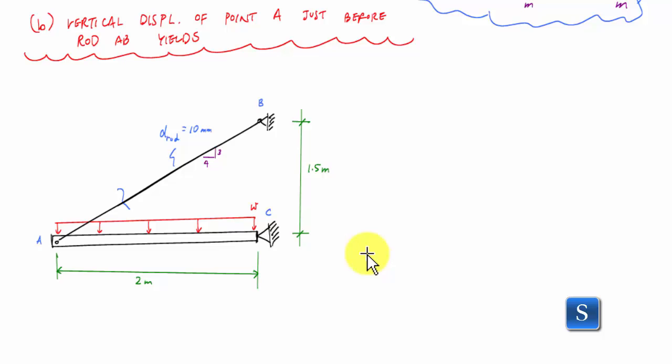At the instant when my rod yields, I can determine the strain in my rod AB and that would just be the yield strain. So here we're going to use Hooke's law because it relates stress to strain. Sigma Y is E times epsilon Y.